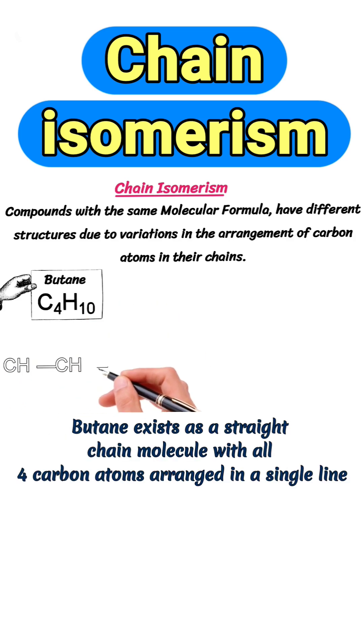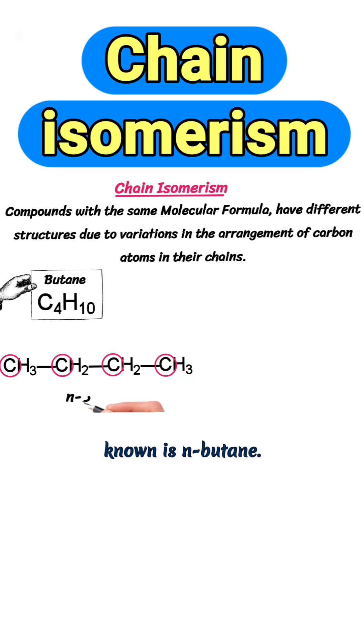In its simplest form, butane exists as a straight chain molecule with all 4 carbon atoms arranged in a single line, known as N-butane.